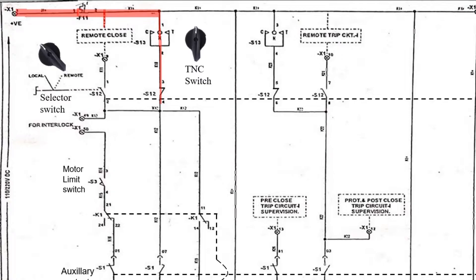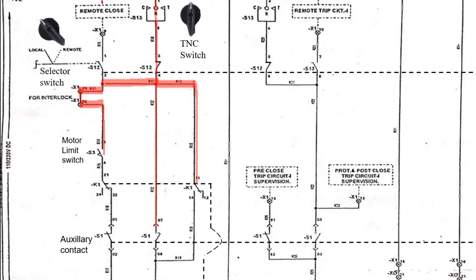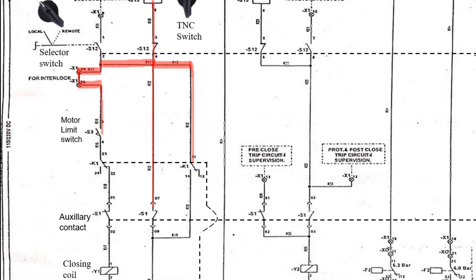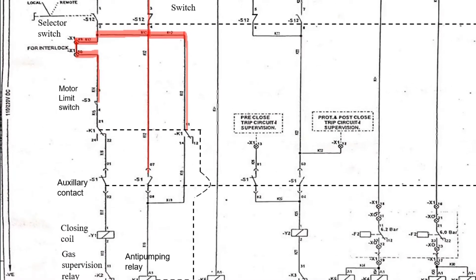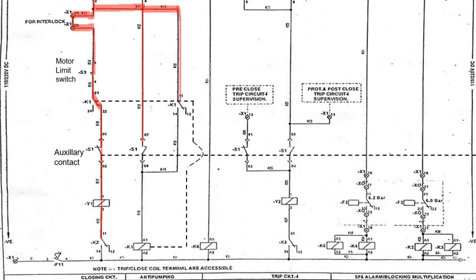Current will not flow through the right-hand side paths but will flow from the left side if the interlock is in okay condition. Now the current will stop if the spring is not charged. If the spring is charged, the motor limit switch will be in closed position and the current will flow downwards. It will flow through auxiliary contacts S1 and closing coil Y1, but will stop at K2, which is an SF6 gas supervision relay.